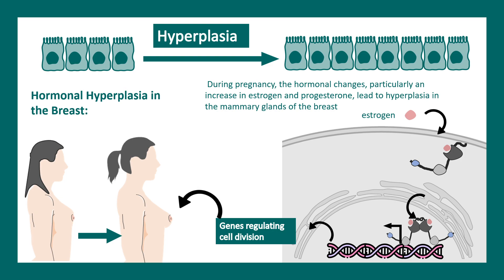Hyperplasia can be pathologic or physiologic. This particular example of breast growth during puberty is physiological hyperplasia — meaning nothing has gone wrong; it's natural.